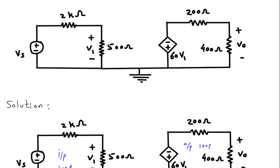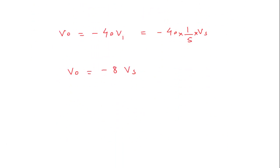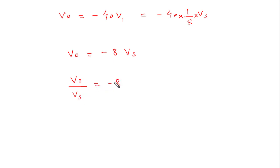What we have to find? We have to find Vo by Vs. So Vo by Vs is equal to minus 8.